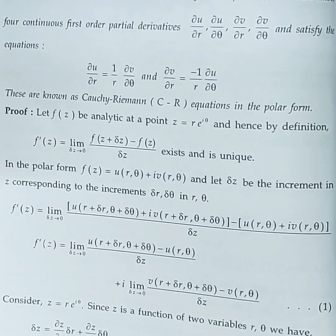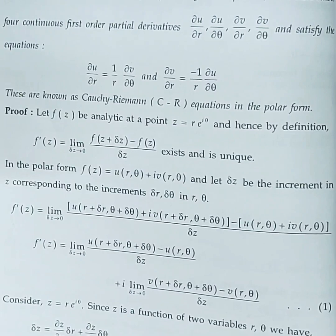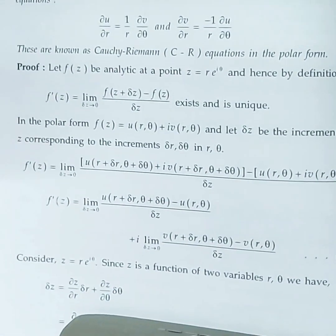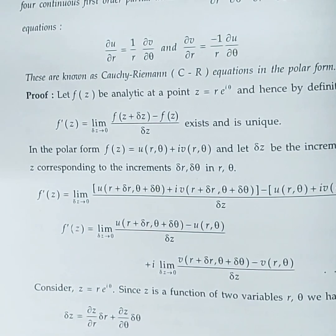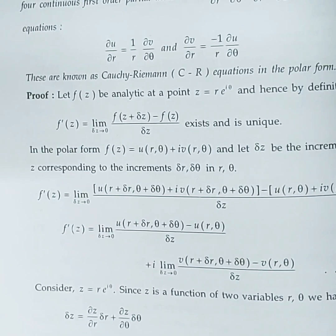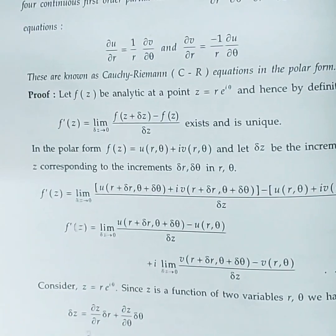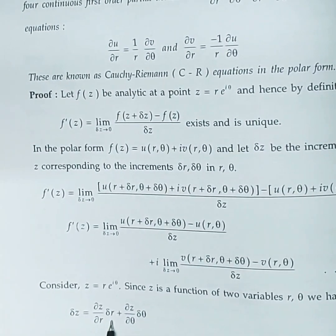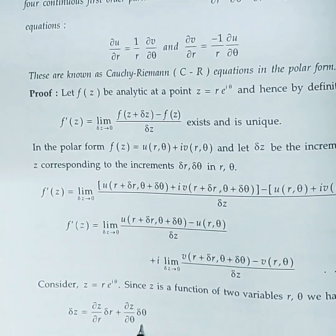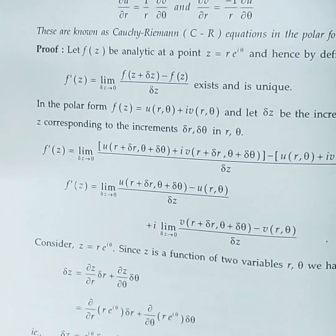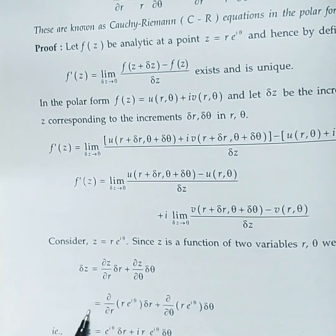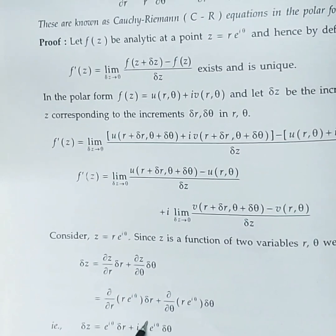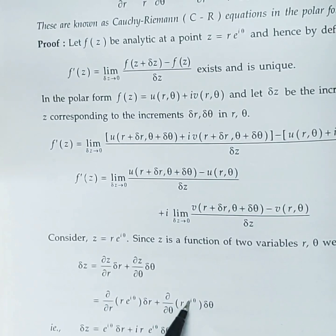Recall that in Cartesian we had Case 1: Δx = 0 and Case 2: Δy = 0. Similarly in polar, the two cases are Δθ = 0 and Δr = 0. Now, Δz = (∂z/∂r)·Δr + (∂z/∂θ)·Δθ = e^{iθ}·Δr + ir·e^{iθ}·Δθ, since z = re^{iθ}, differentiating with respect to r gives e^{iθ}, and with respect to θ gives ir·e^{iθ}.